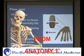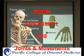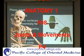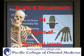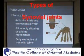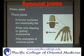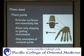Plane joints are non-axial joints — you don't have an axis of movement. And you'll see when we talk more about the other joints, they all have an axis of movement. So plane joints are just sliding; they're moving in a single plane.